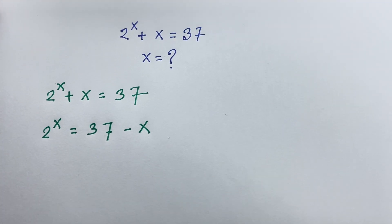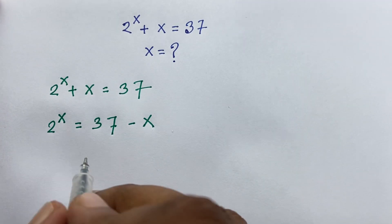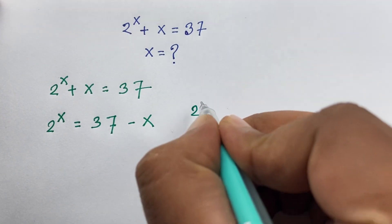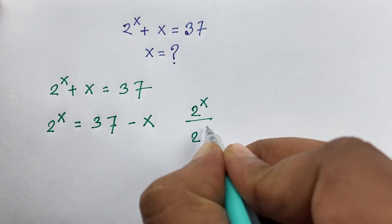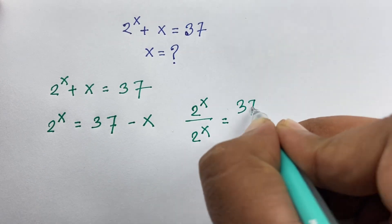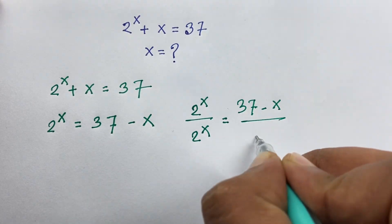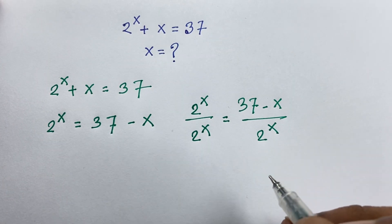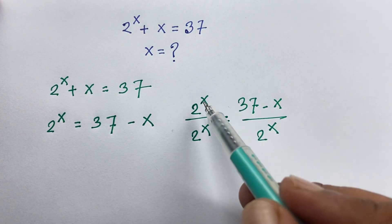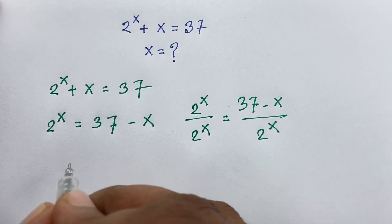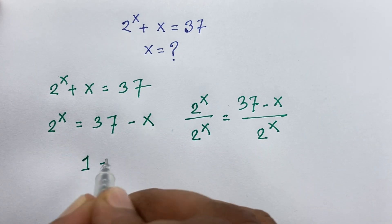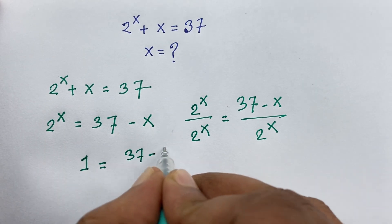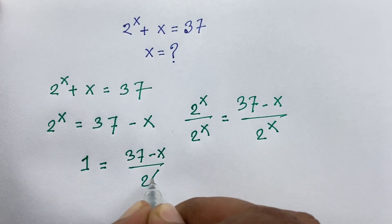Now in this expression, if I divide both sides by 2 to the power x, I can see easily: 2 to the power x over 2 to the power x is equal to 37 minus x over 2 to the power x. This cancels out, and we find 1 is equal to 37 minus x over 2 to the power x.